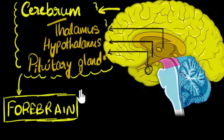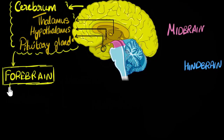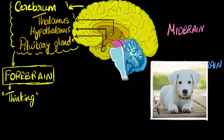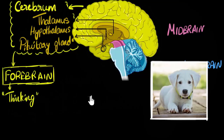What does the forebrain do? We already mentioned voluntary functions, but let's dig deeper. A lot of it involves thinking — your learning ability, speech, language — all of that comes from your forebrain. Also, the reason you're able to see something is because of your forebrain. Your eyes send the signal, but the forebrain does the processing. Similarly, you can hear because of your forebrain. All five senses are processed by your forebrain — that's the sensing function.